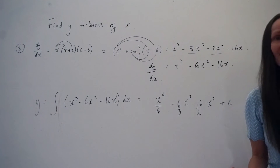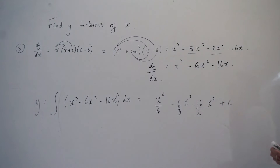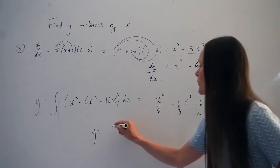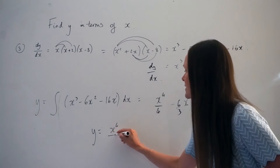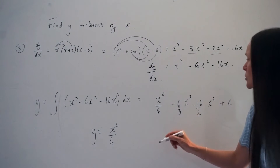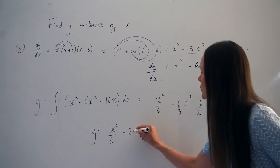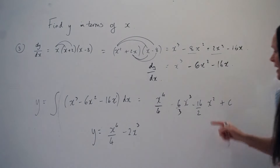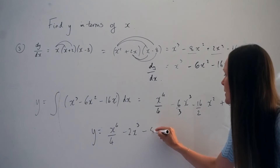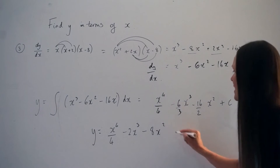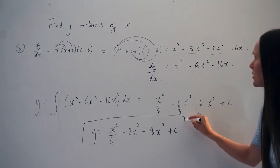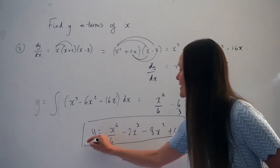So the final step is to simplify. The equation would be y equals x to the 4 over 4. Negative 6 divided by 3 is negative 2, so we've got minus 2x cubed. Negative 16 divided by 2 is negative 8, so take away 8x squared, and then plus c. So there's our equation — we have found y in terms of x.